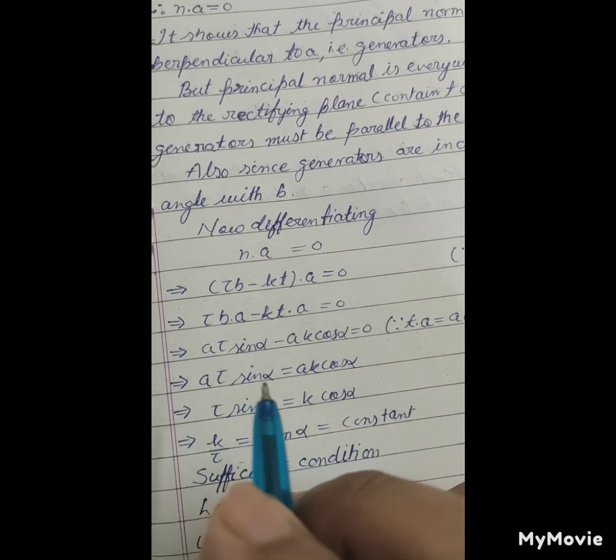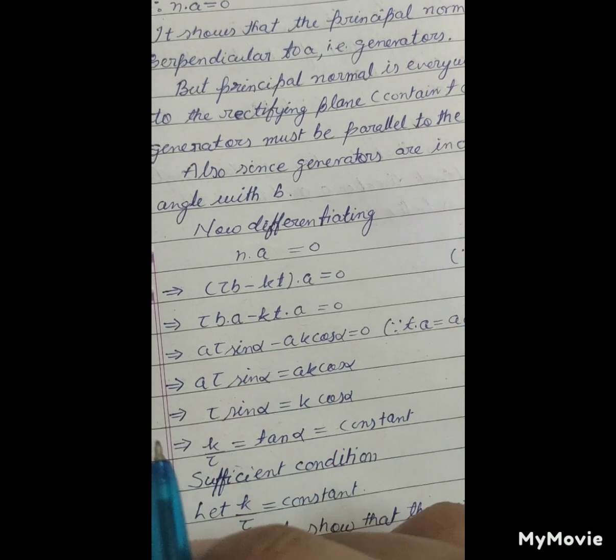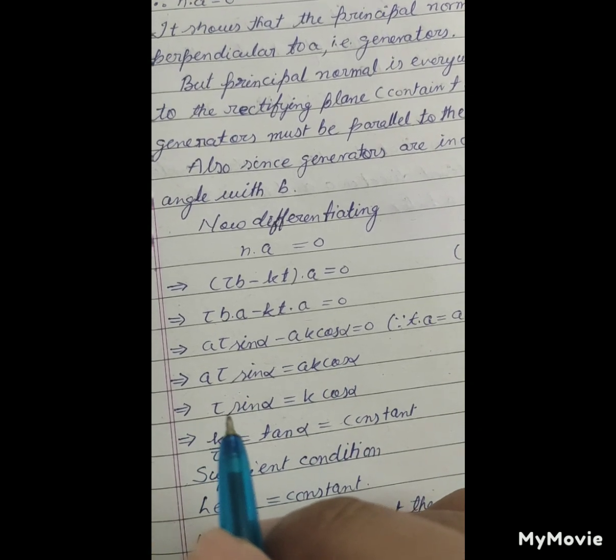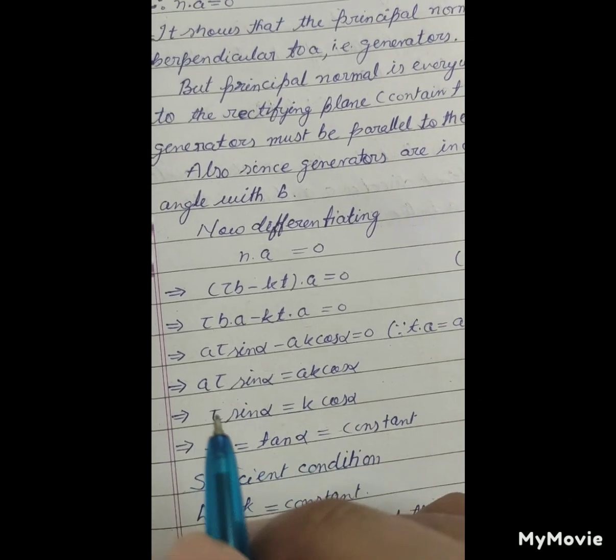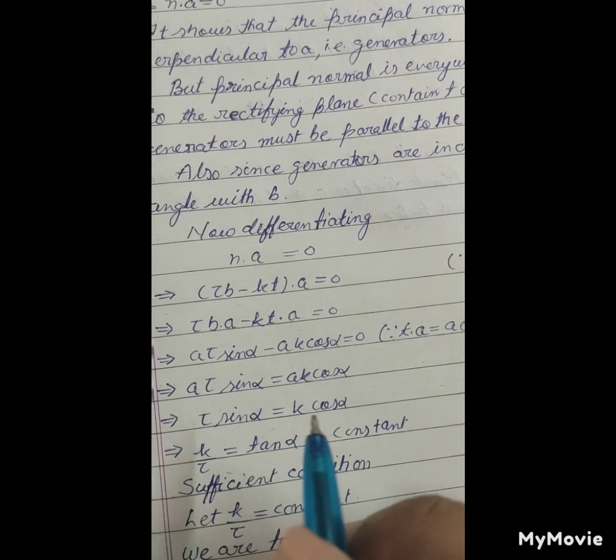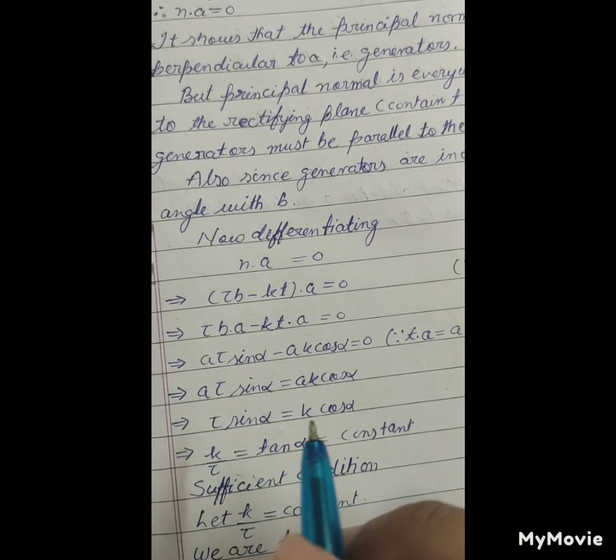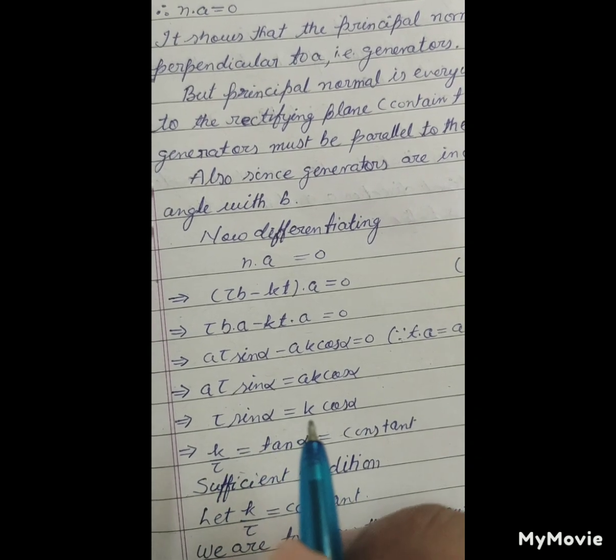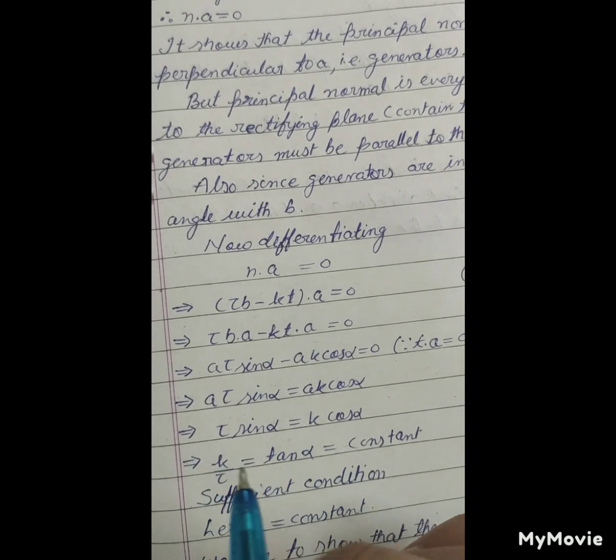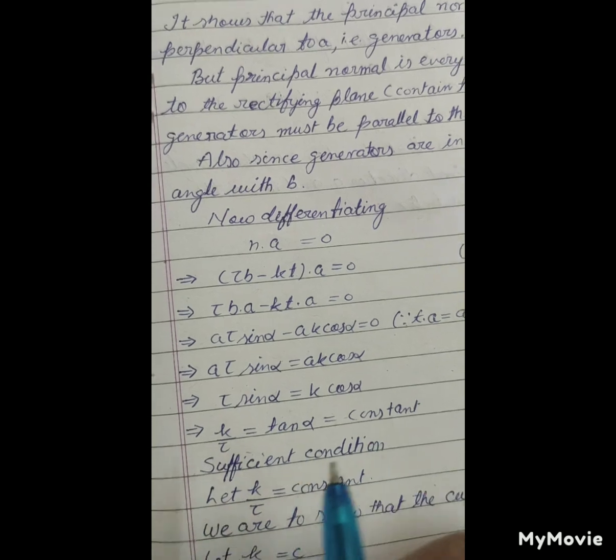Which implies τ sin alpha equals k cos alpha. So k upon τ equals tan alpha is constant.